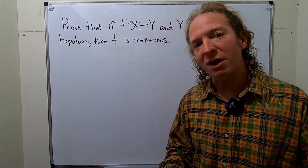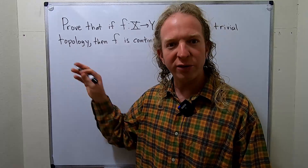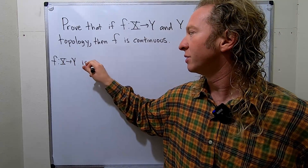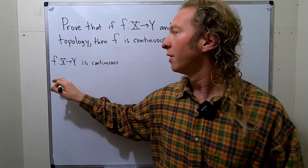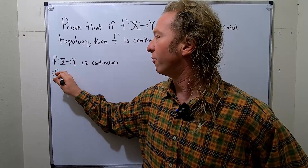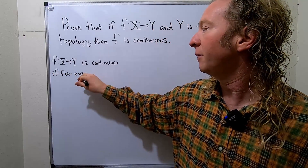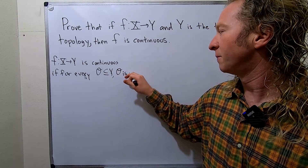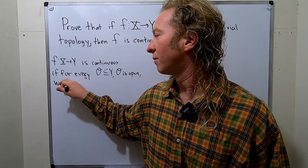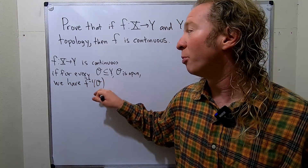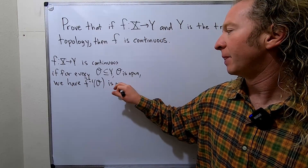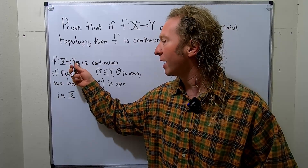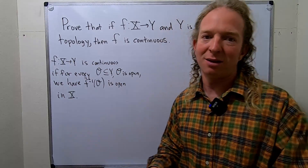In this proof we're going to be using the topological definition of continuity. So let me write that here briefly as a reminder. We say that f from X to Y is continuous if for every open subset O contained in Y, we have that the inverse image of O is open in X. This is the standard definition.